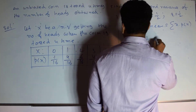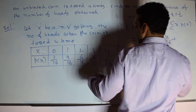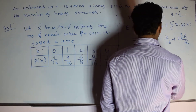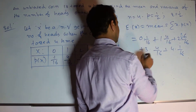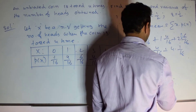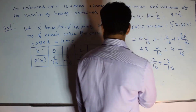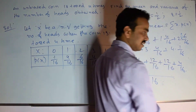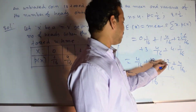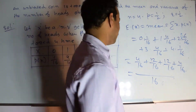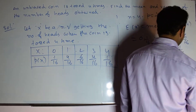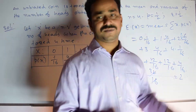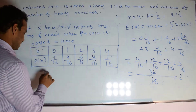E(x) = 0×(1/16) + 1×(4/16) + 2×(6/16) + 3×(4/16) + 4×(1/16) = 0 + 4/16 + 12/16 + 12/16 + 4/16 = (4 + 12 + 12 + 4)/16 = 32/16 = 2. Luckily we got an integer value. Therefore, expectation of x, the mean of random variable x, equals 2.